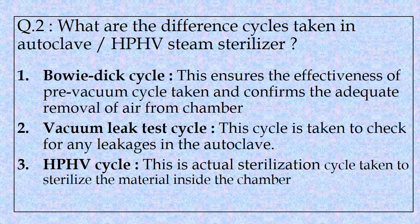Question number two: What are the different cycles taken in autoclave or HPHP steam sterilizer? Basically three types of cycles are taken: the Bowie-Dick test cycle, vacuum leak test cycle, and HPHP cycle. The Bowie-Dick cycle ensures the effectiveness of the pre-vacuum phase, which removes air and replaces it with steam, confirming adequate removal of air pockets from the chamber. The vacuum leak test checks for any leakages in the chamber. The third, the HPHP cycle — high pressure high vacuum cycle — is the actual sterilization cycle to sterilize material inside the chamber.